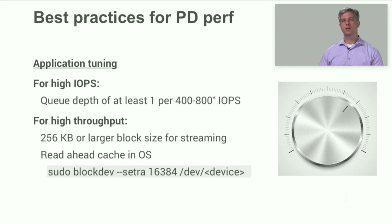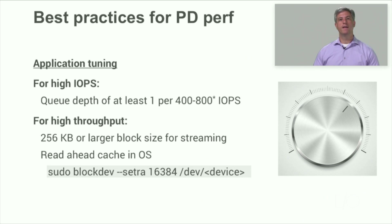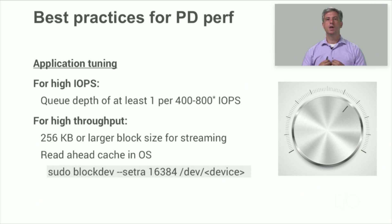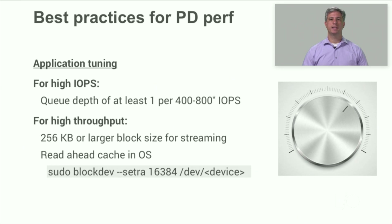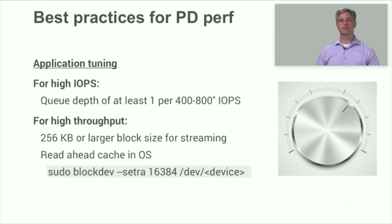The next performance recommendation is about tuning your application properly for your IO pattern. Starting with IOPS: PD attains its high IOPS performance through the use of parallelism on the backend. Therefore, for higher IOPS you may need a larger queue depth or application thread pool — the more IOs you can issue at once, the faster the PD volumes can return the data. You'll need a queue depth of 1 for every 400 to 800 IOPS you require, up to a maximum queue depth of 64. If you need higher throughput as opposed to higher IOPS, the best thing to do is to increase the IO size to 256 kilobytes or greater. Also, increasing the OS readahead cache will improve streaming IO, especially if you're forced by the application to use small block sizes. Please note that we intend for these values to change over time as we improve persistent disk — consult the persistent disk documentation for the latest values.